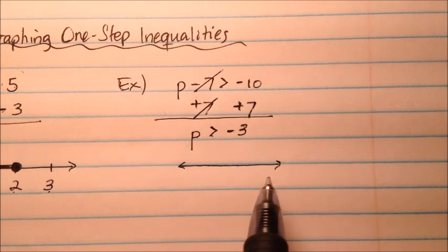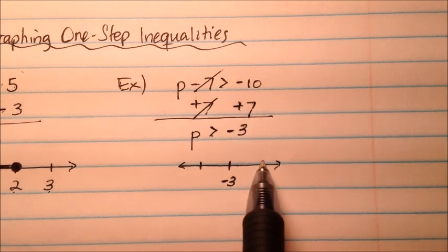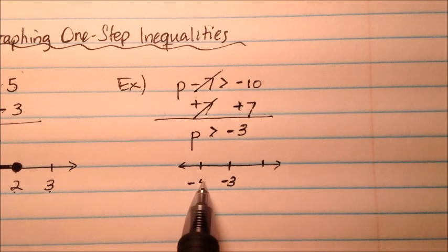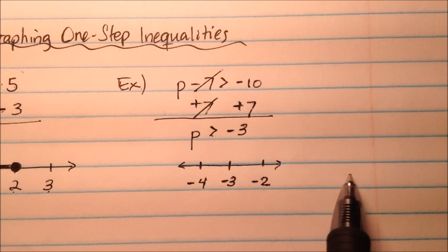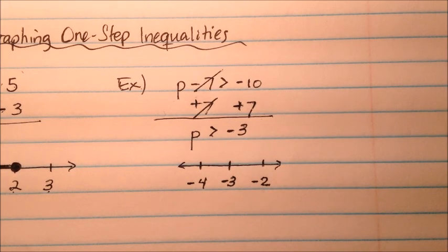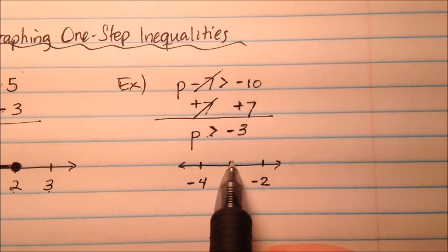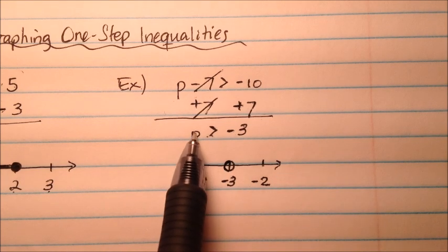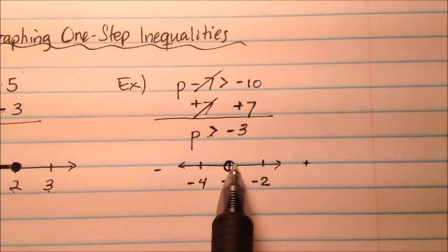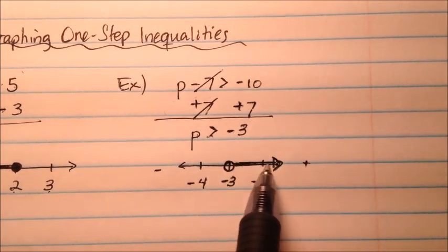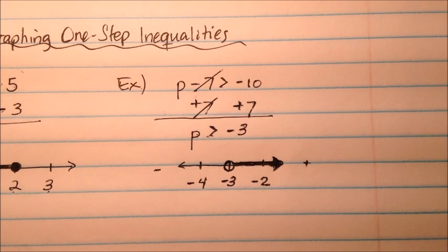We draw a number line with negative 3 in the middle, and negative 4 and negative 2 on either side — this is just to the left of 0. Since p is greater than negative 3 but doesn't include negative 3, we put an open circle. Then since p is greater than, we go to the greater side, which is to the right, and shade the arrow in that direction. There's the graphical solution for this inequality.